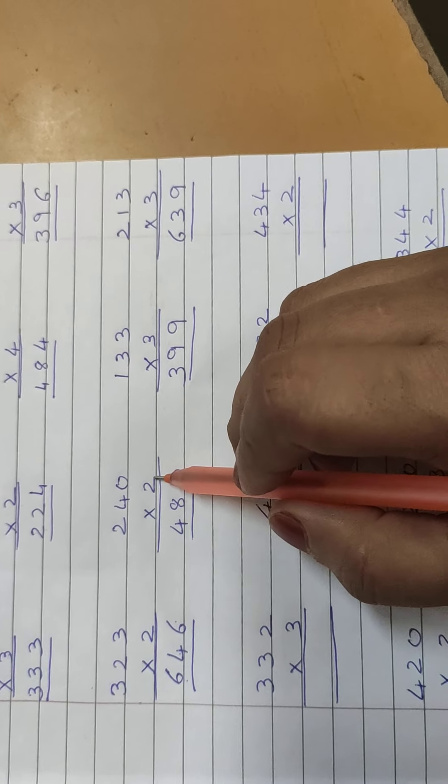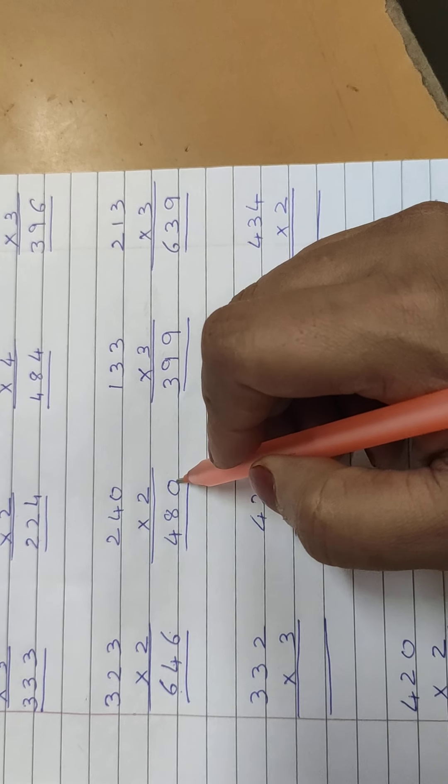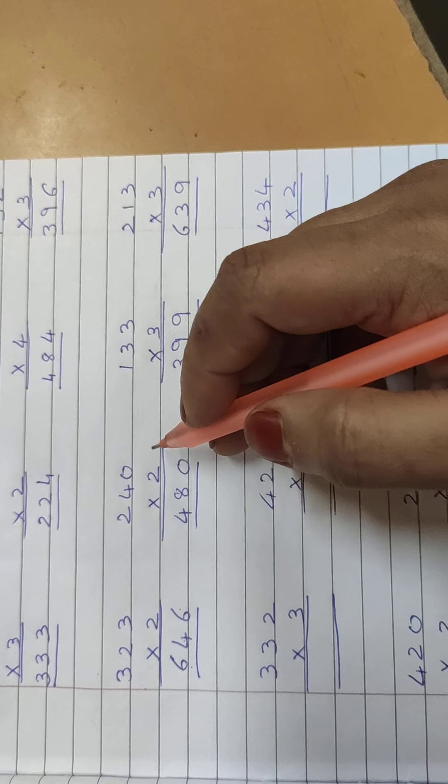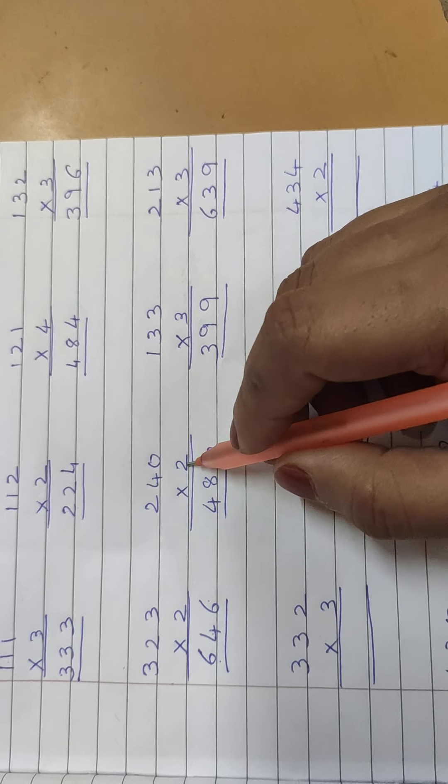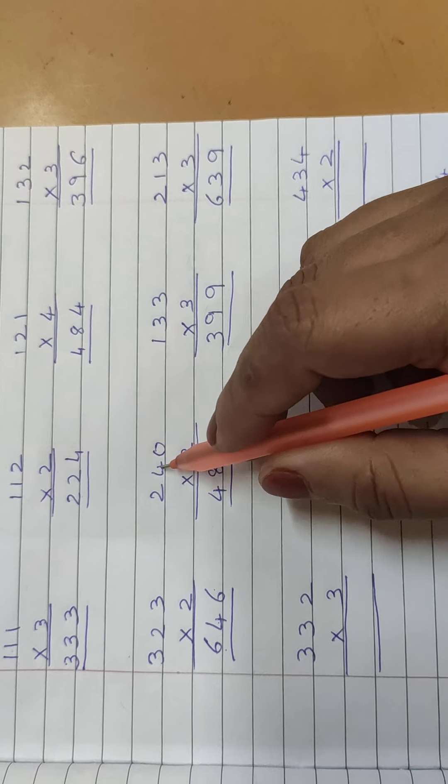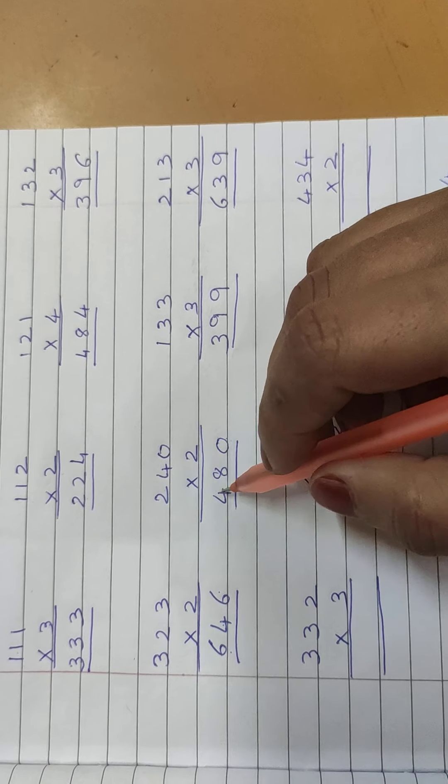240 multiply by 2. 2 zeros are 0. As you know, whatever number we multiply with 0, our answer will be 0. 2 zeros are 0, 2 fours are 8, 2 twos are 4.